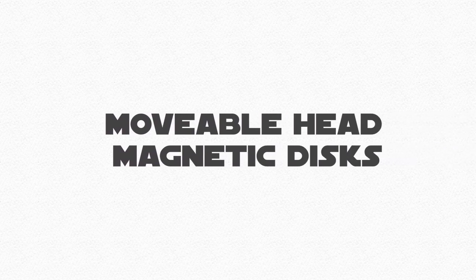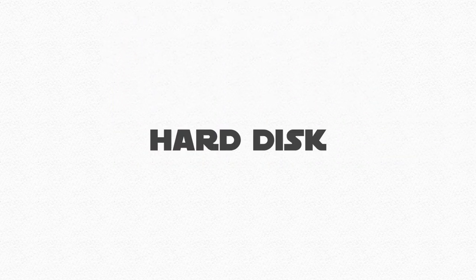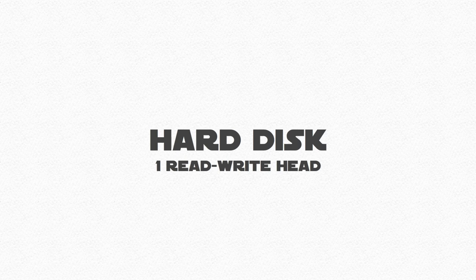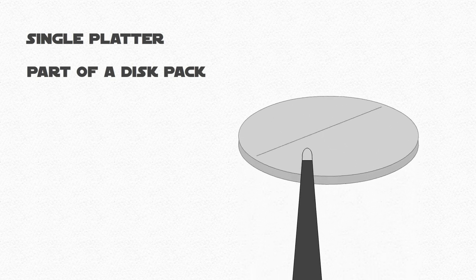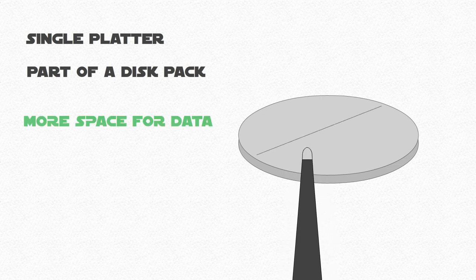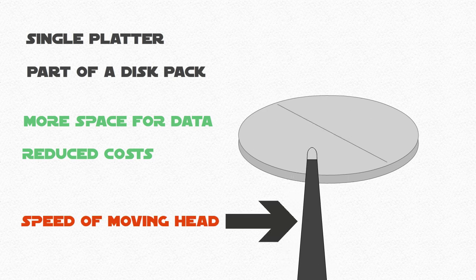Moveable head magnetic disks, such as a hard disk, have one read-write head that floats over each surface of each disk. They can be single platter or part of a disk pack. And because the head and arm can move, tracks can be smaller, resulting in more space to store data. It is common to be using a hard disk as they have reduced in price, but they are constrained to the speed of the moving head. 7200 or 5400 RPM are the common speeds.